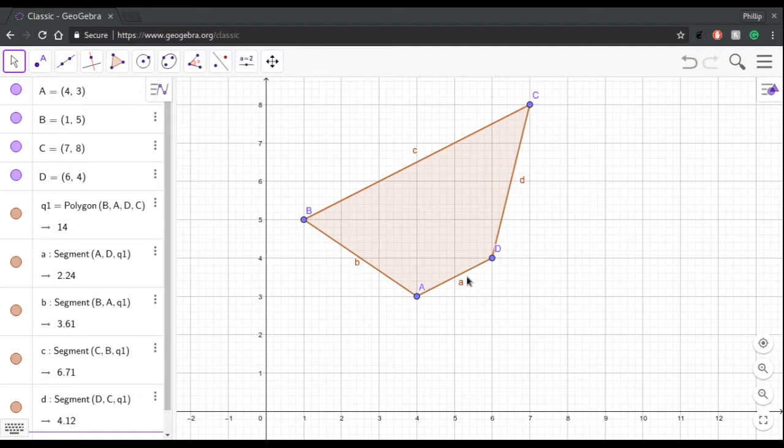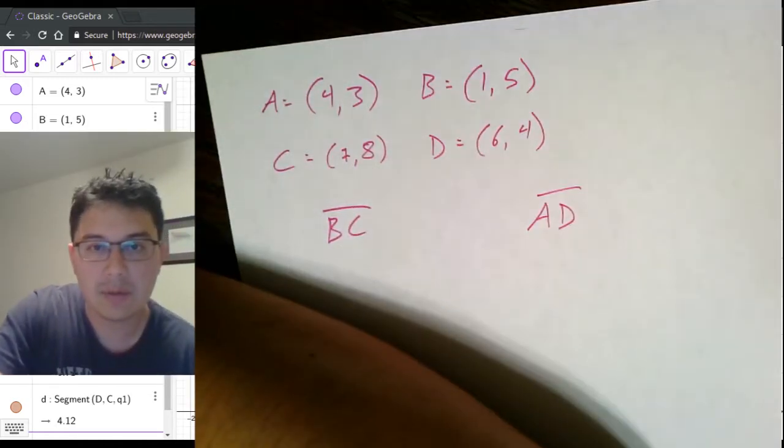So, theoretically, just looking at this here, we can tell that B and D are not parallel. The question is, are C and A parallel? So, we need to find out if the segment BC and the segment AD are parallel. Now, we think back to our algebra and our linear functions that we did. In order for two lines to be parallel, they must have the same slope. So, we're going to use the slope formulas, and we're going to calculate these two slopes, and we'll find out if they have the same slope. If they have the same slope, then they are parallel, and then this is, in fact, a trapezoid as opposed to just some random quadrilateral.